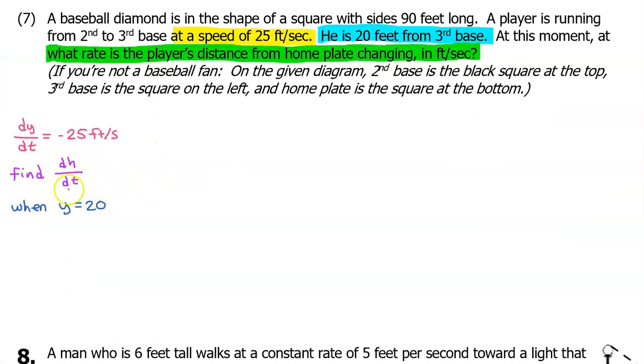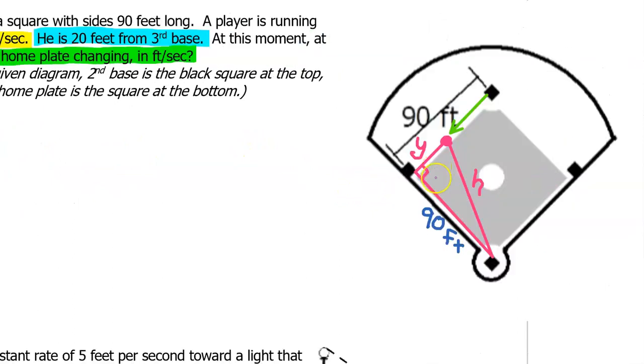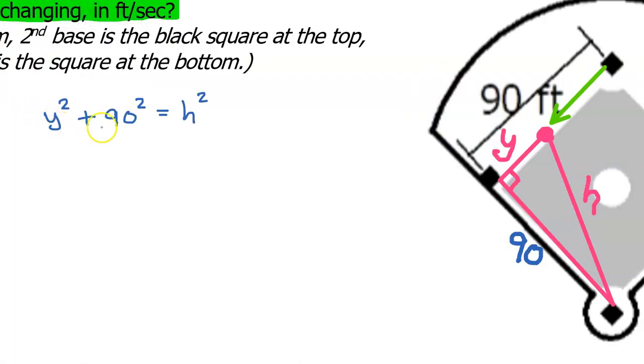Well, now we need to find a relationship between h and y so we can set up an equation. But this is a right triangle so we can simply use the Pythagorean theorem. So y squared plus 90 squared is equal to h squared.